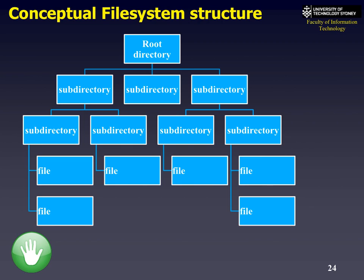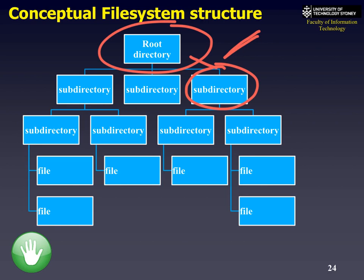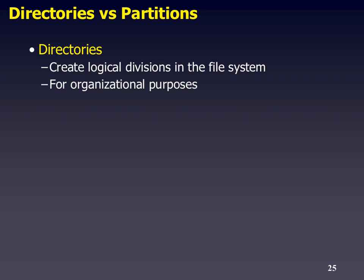This is what a conceptual file system looks like — notice it's a tree. You have a root directory at the top, which could be represented as '/' in Linux. You have subdirectories beneath that, like '/home', and so on down to the actual files. Directories are in some ways artificial — they're purely for logical division in the file system, typically for users to see how files are organized. A computer doesn't really care whether a file is in '/home' or '/home/students'.